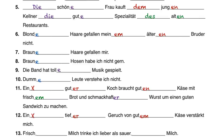Nummer zwölf: ein tiefer Geruch von gutem Käse verstärkt mich. Geruch is masculine nominative after ein-word without ending, so adjective takes ER: ein tiefer Geruch. Von is a dative preposition — Käse is masculine non-preceded dative, so EM: gutem Käse. A deep smell of good cheese strengthens me. Nummer dreizehn: frischer Milch trinke ich lieber als saure Milch. Milch is feminine; both instances are non-preceded — frischer (genitive? or accusative with ER for non-preceded feminine nominative/genitive) and saure (accusative E). I prefer to drink fresh milk over sour milk.